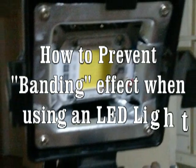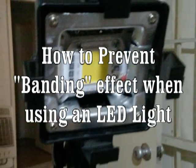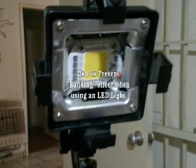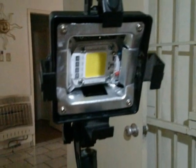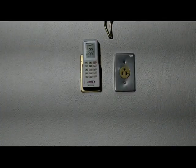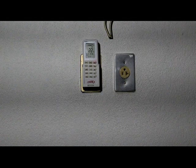When using an LED light for video, a very nasty effect can occur: dark horizontal bands moving across the screen. These two screenshots were made with the same parameters.